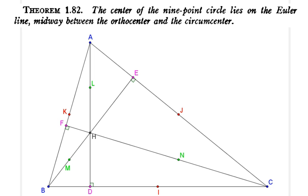As we suggested, the center of the nine-point circle which we know goes through those nine points lies on the Euler line. Remember, the Euler line is the line defined by the orthocenter, centroid, and the circumcenter.